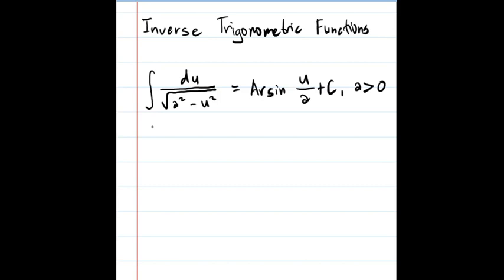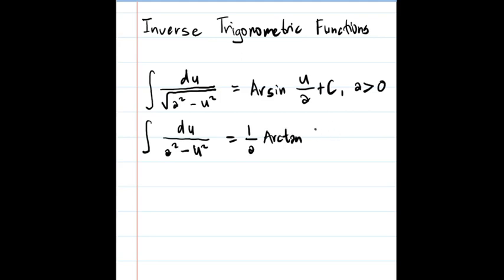The second formula is the integral of du over u squared plus a squared, which equals 1 over a times arc tangent of u over a plus C. These are the two formulas we are going to use in integrating this type of integrals.